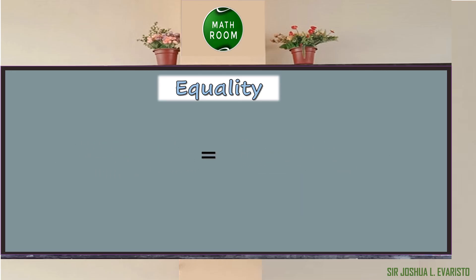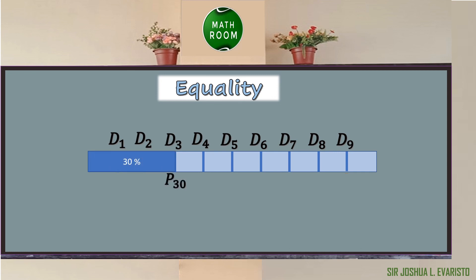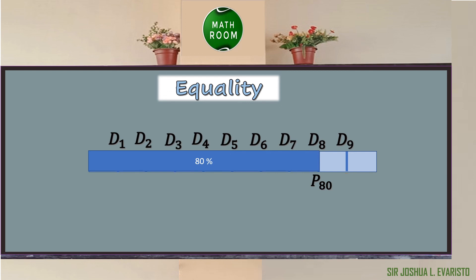Moreover, each decile has a corresponding percentile. D sub 1 equals P sub 10, which is 10% of the distribution. D sub 2 equals P sub 20, which is 20%. D sub 3 equals P sub 30, which is 30%. D sub 4 equals P sub 40, which is 40%. D sub 5 equals P sub 50, which is 50%. D sub 6 equals P sub 60, which is 60%. D sub 7 equals P sub 70, which is 70%. D sub 8 equals P sub 80, which is 80%. D sub 9 equals P sub 90, which is 90%.